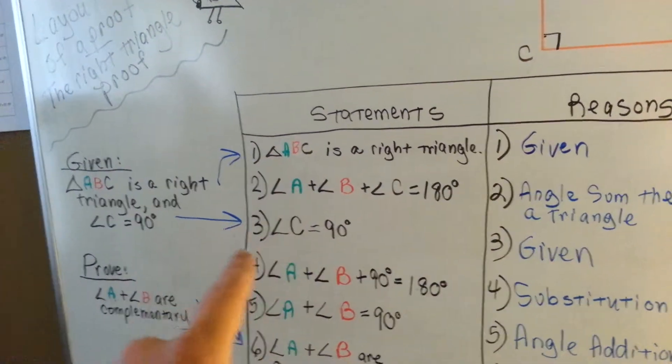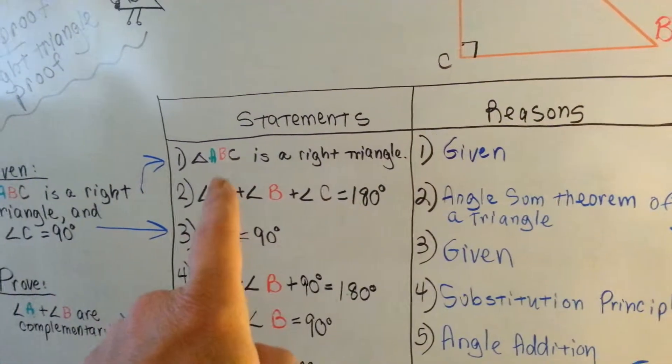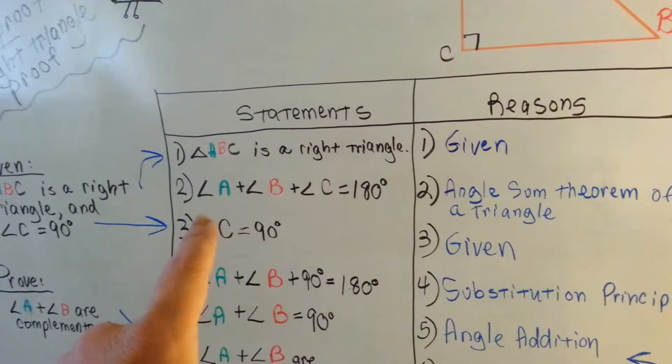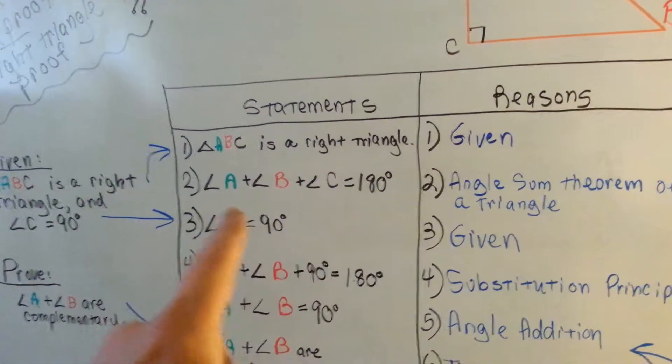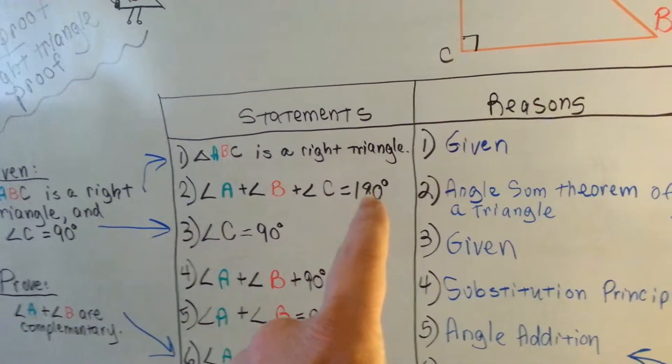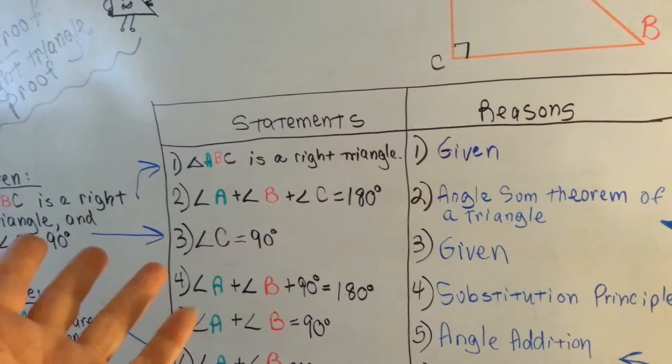So that's right up there. So the next thing we did because we know that it's a right triangle is we've said, well, if it's a right triangle and it's a triangle, then angle A and angle B and angle C must equal 180 degrees. It's a triangle, right?